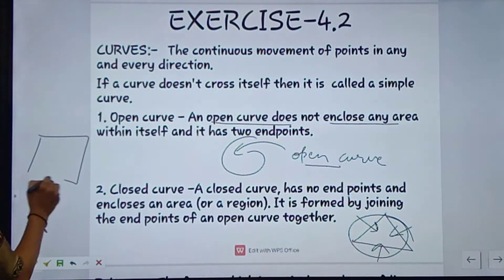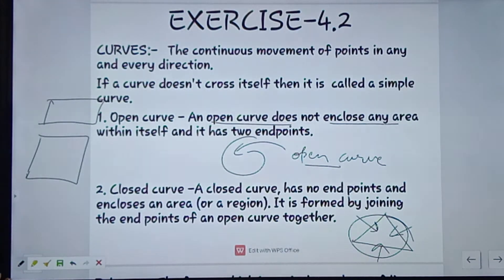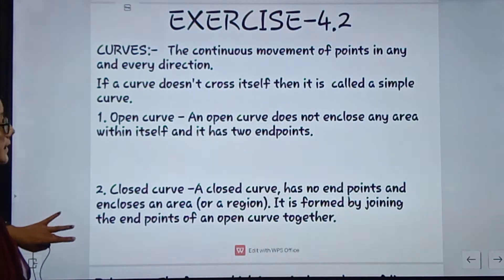Suppose triangle, rectangle, square - rectangle and square, closed curve. Ok, next is...